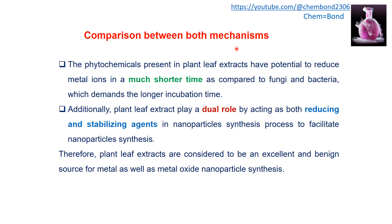Here is a comparison between both mechanisms — the microorganism-based method and the plant leaf extract method. Both are biological methods and can be equally useful for nanoparticle formation, but we will compare which is better. Phytochemicals present in plant leaf extract can reduce metal ions in much shorter time compared to fungi and bacteria, which demand a longer incubation time.